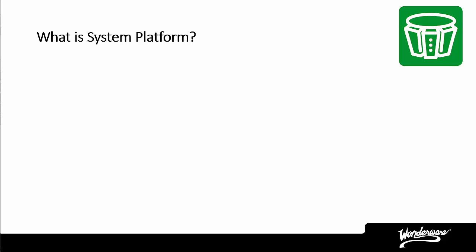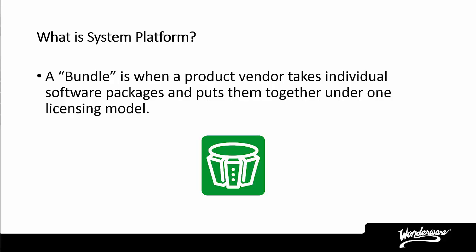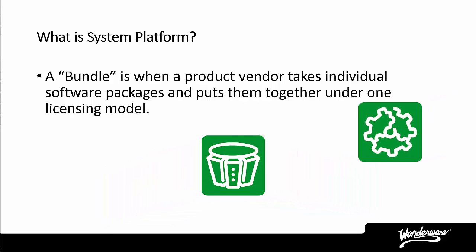So what is System Platform? In the most basic terms, System Platform is a bundle of related software. Microsoft took Word, Excel, and PowerPoint and put them together to create a new product suite called Microsoft Office. When you purchase Microsoft Office, you actually get licenses for Word, Excel, and PowerPoint. Wonderware has done the same thing — Wonderware has taken several software products and combined them into a software bundle that can be licensed.